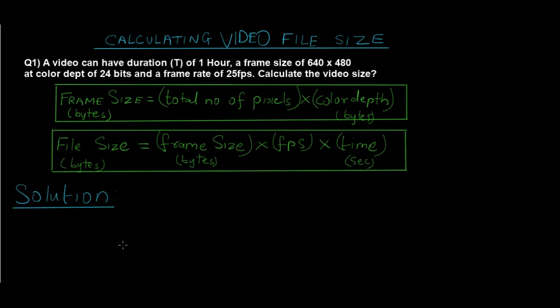So let's see what the numerical is about. Here's the question: A video can have duration T of 1 hour, a frame size of 640 into 480, a color depth of 24 bits, and a frame rate of 25 FPS. You have to calculate the video size.